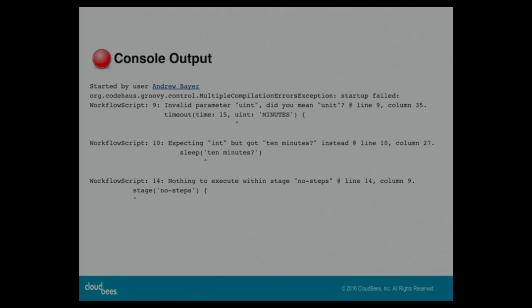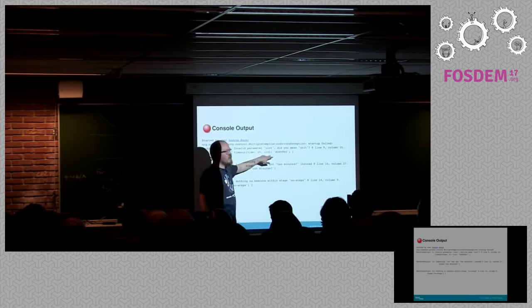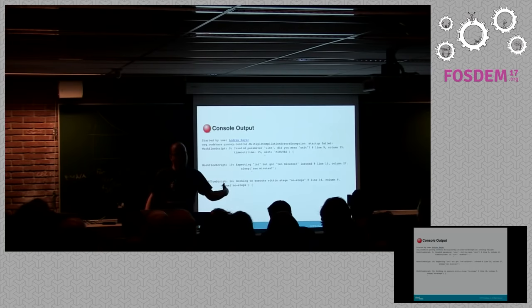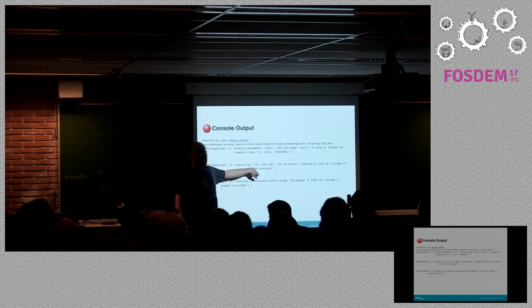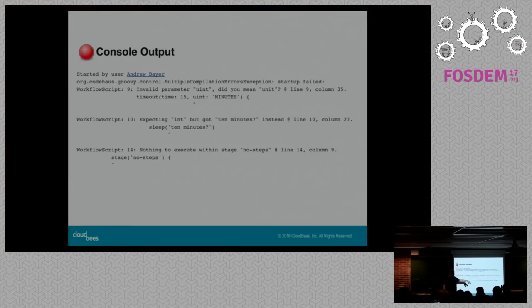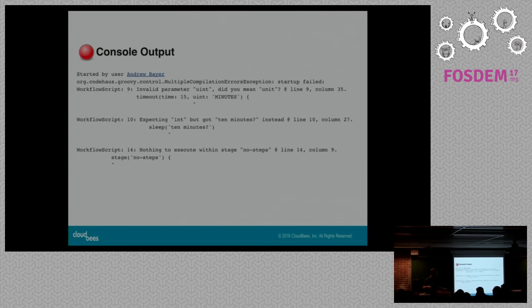For example: 'invalid parameter uint, did you mean unit?' — because the timeout step was used and the parameter was typed as 'uint' instead of 'unit'. Another example: calling the sleep step with a string '10 minutes' instead of a number — it tells you it expected an int but received '10 minutes.' If you have an empty stage with no steps, it reports that there's nothing to execute in that stage, points at what went wrong with line and column information, just like a compilation error.